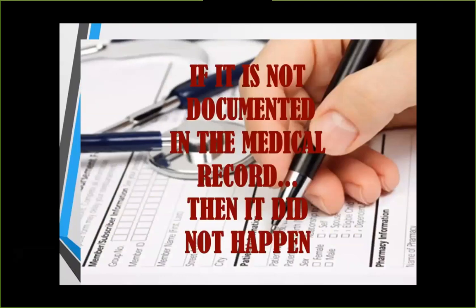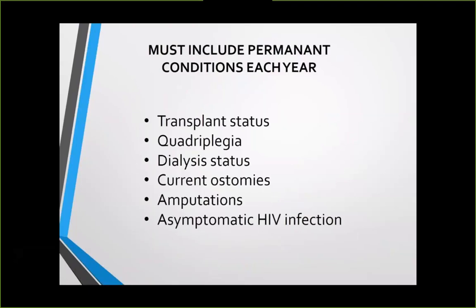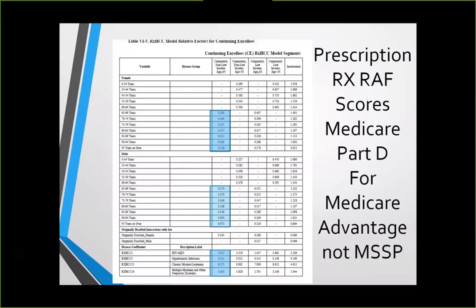Acceptable linkage verbiage includes 'due to,' 'because of,' and 'related to.' The word 'with' is generally not acceptable — except for diabetes: 'diabetes with retinopathy,' 'diabetes with renal manifestations,' 'diabetes with neuropathy' are all acceptable. Every year things reset, so remember ongoing conditions: transplant status, quadriplegia, dialysis, ostomy, amputation, and even HIV infection — patients may be asymptomatic with negative cultures, but you must mention it, document the treatment.